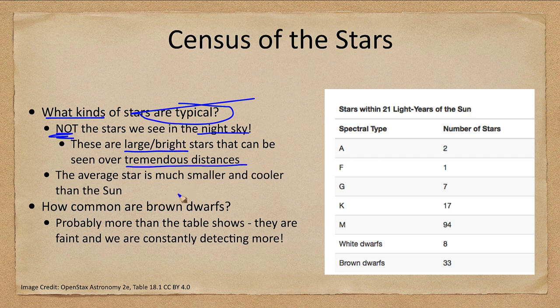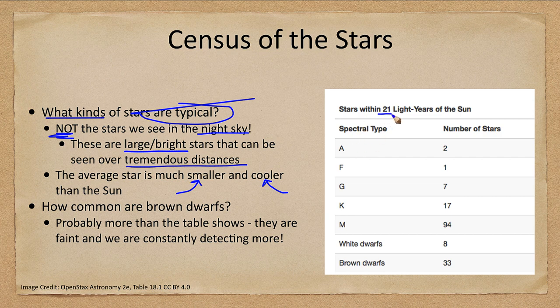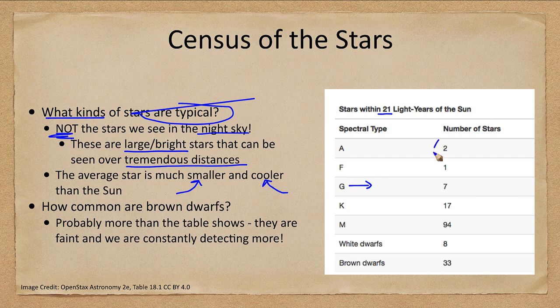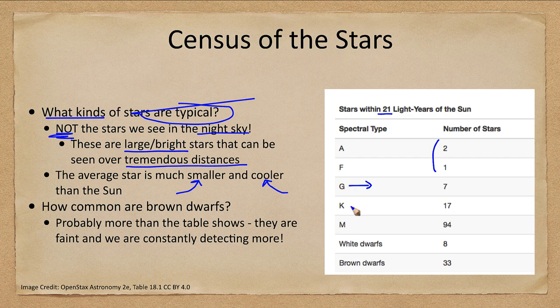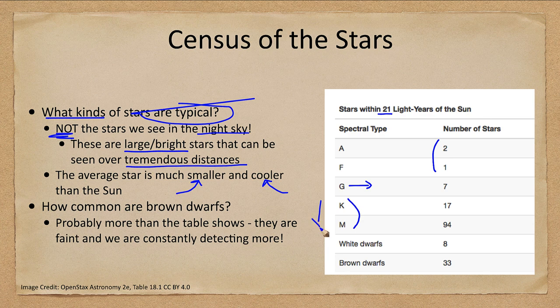A typical star is smaller and cooler than our Sun. So let's take a look at stars within 21 light years of the Sun. The Sun is a G type star. There are seven of those and three stars that are hotter than our Sun, of classes A and F, and there are 111 stars of class K and M. So we see that there are far more stars on the cooler side of the Sun than on the hotter side.